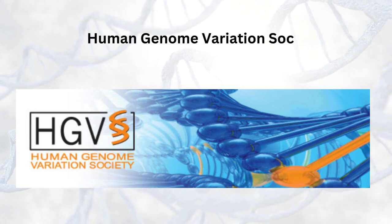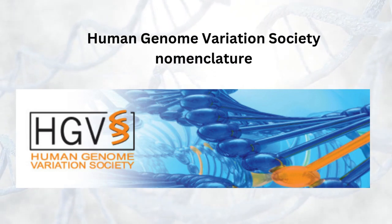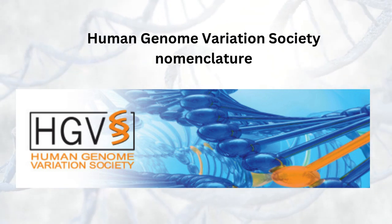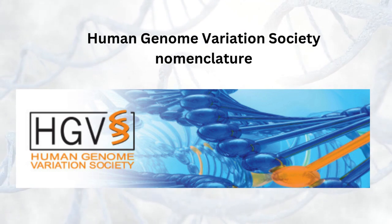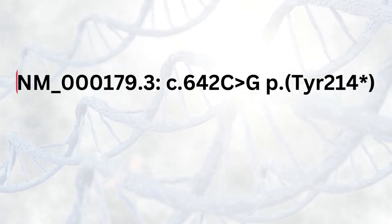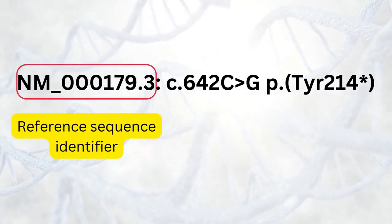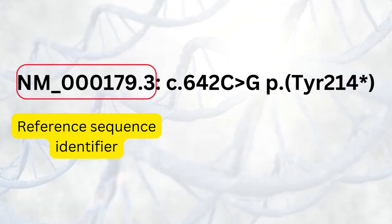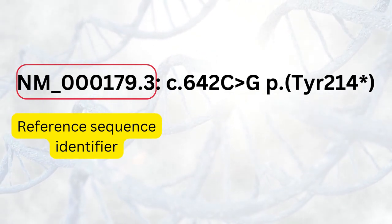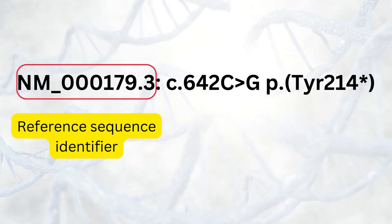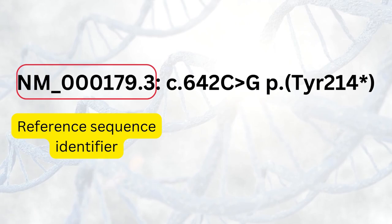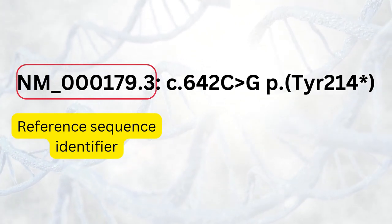In order to understand what a variant means, it is important to know the naming conventions. The standard method for naming variants is called the HGVS nomenclature. HGVS nomenclature is made up of three main components. The first part is the reference sequence identifier, which denotes the exact transcript in which the variant occurs. It consists of a prefix, followed by an underscore, and a set of numbers. For example, 'NM' indicates that this is a coding transcript, and the numbers point to the gene to which this transcript belongs as well as the transcript version.